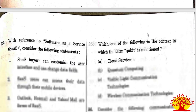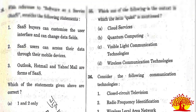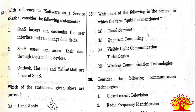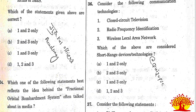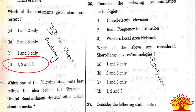Thirty-third question on Software as a Service (SaaS): all three statements are correct. Outlook, Hotmail, and Yahoo Mail are forms of SaaS. Statements 1, 2, and 3 are all correct. Option D is the right answer.